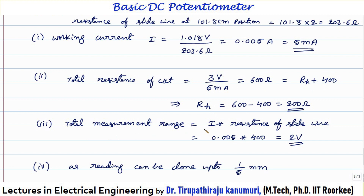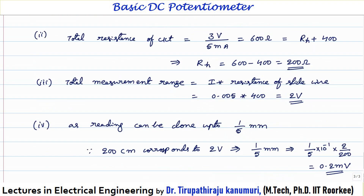Total measurement range equals current multiplied by total resistance of the slide wire = 0.005 × 400 = 2 volts. For resolution: we can read up to 1/5 mm = (1/5) × 0.1 cm = 0.02 cm. Voltage per centimeter = 2 V / 200 cm = 0.01 V/cm. Resolution = 0.02 cm × 0.01 V/cm = 0.2 millivolts. So the resolution of the instrument is 0.2 millivolts.